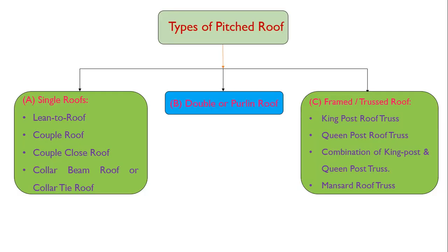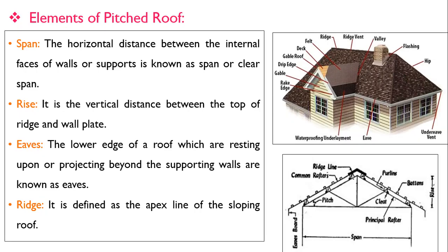Coming to types of pitched roofs, they are grouped into three categories: number one is single roofs — including lean-to roof, coupled roof, coupled closed roof, and collar beam roof; next is double or purlin roof; and the third is frame or truss roof — including king post truss, queen post truss, combination of king post and queen post, and mansard roof truss.